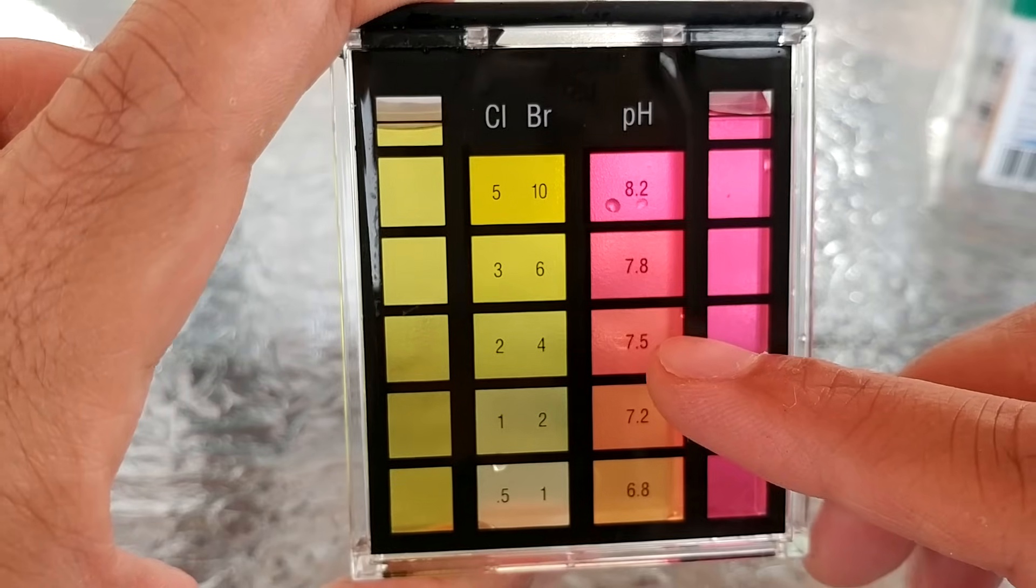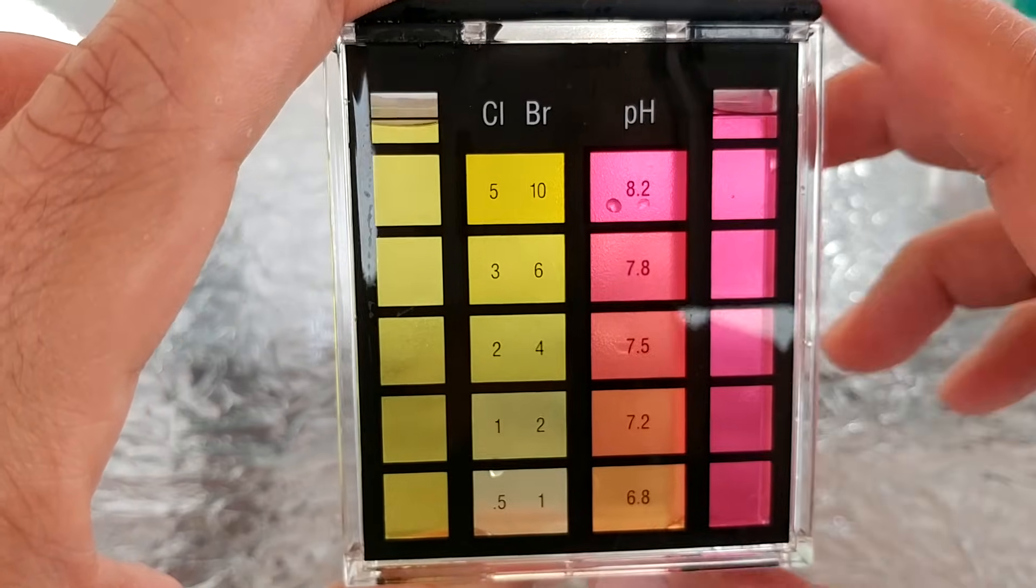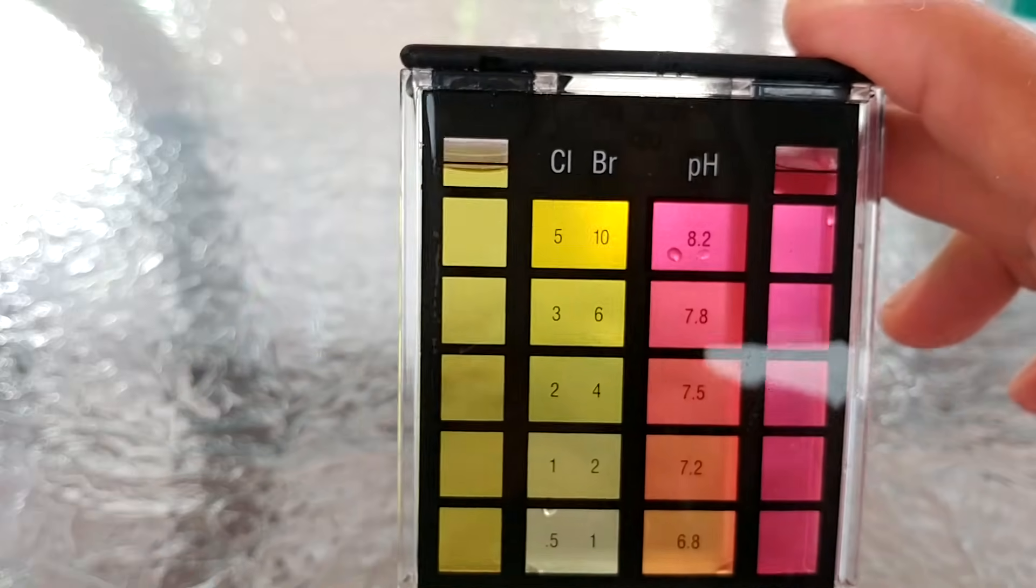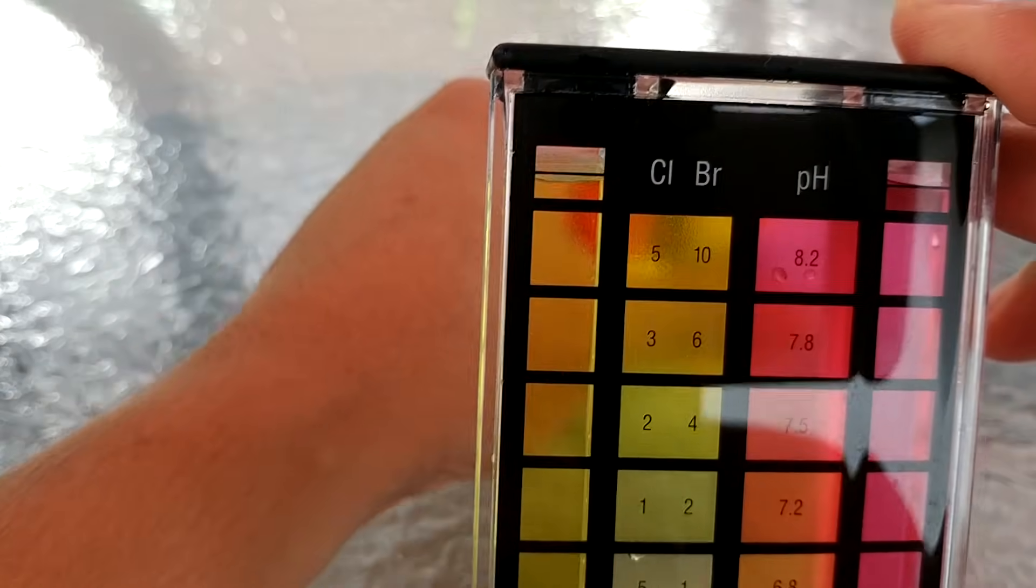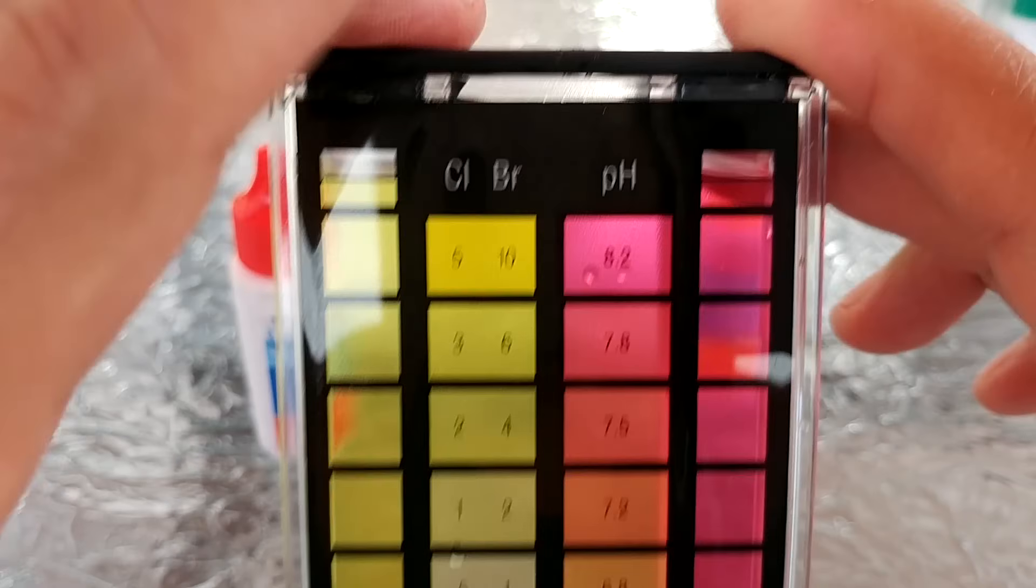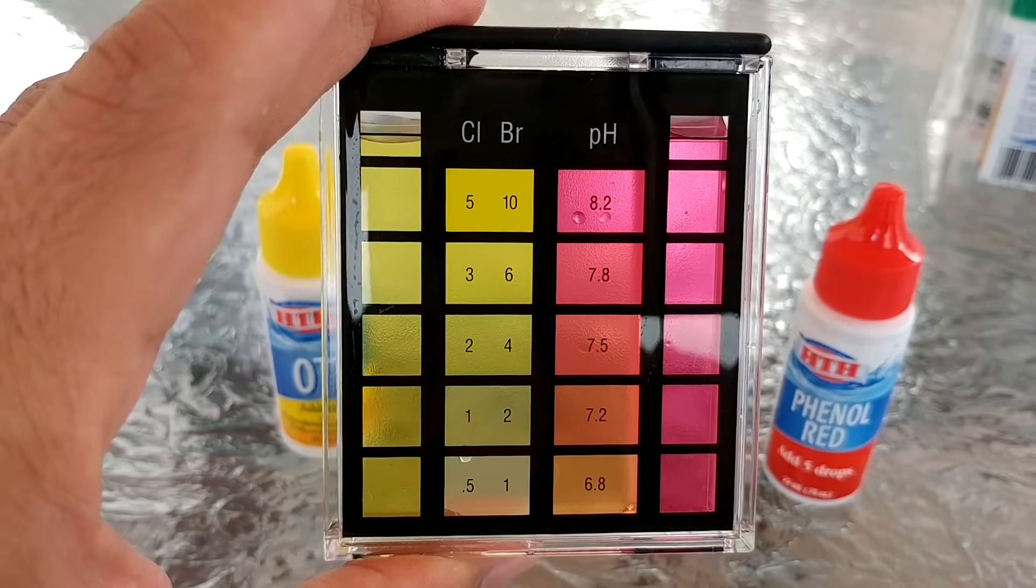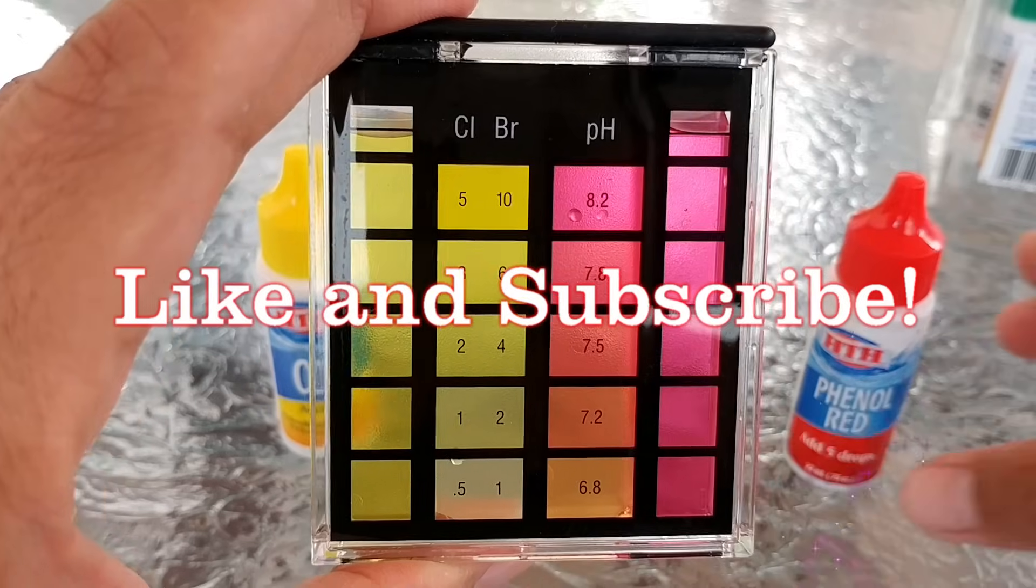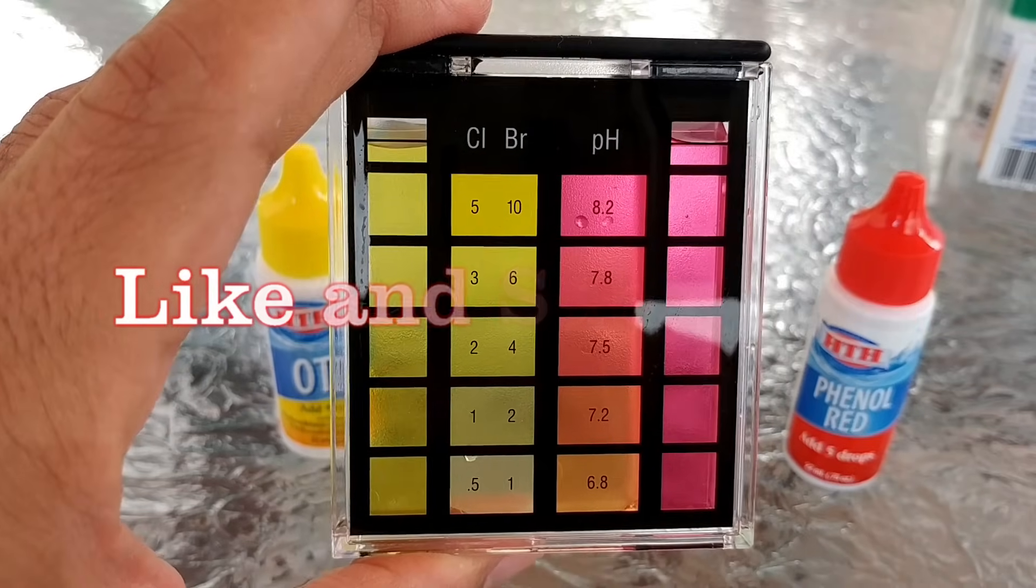So that's how you check for your chlorine and your pH using the HTH six-way test kit. If you haven't done so yet, please click on the like and subscribe button so that you can be notified when I upload more videos. Thank you.